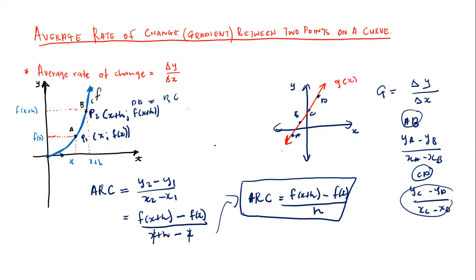Remember: average rate of change is the gradient of a linear function between two points — it does not represent the gradient of the whole curve. For example, if you substitute numerical values and get positive 2, that does not mean it is the gradient of the whole curve. For a linear function, however, the gradient you calculate between any two points corresponds to the gradient of the whole function.